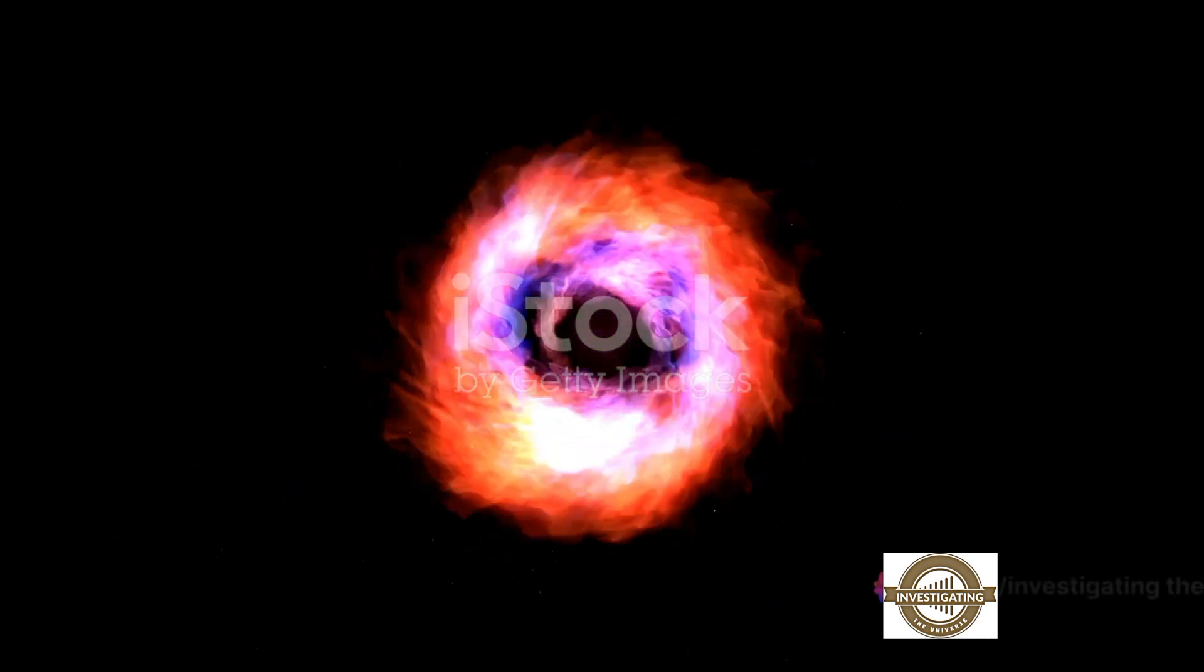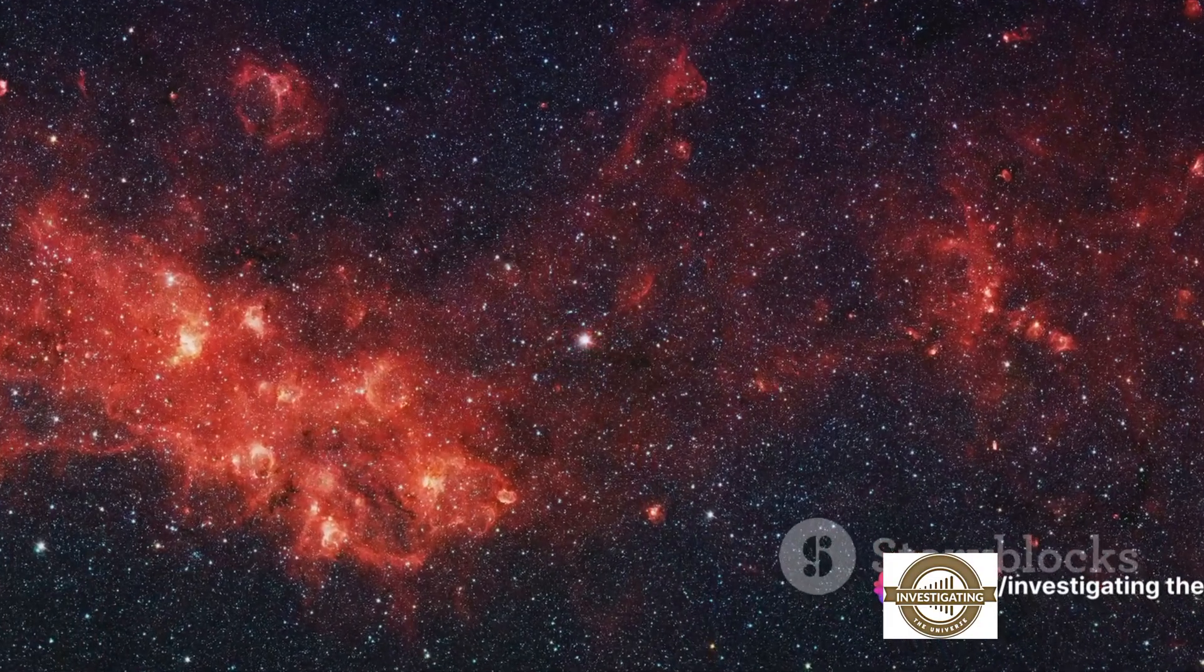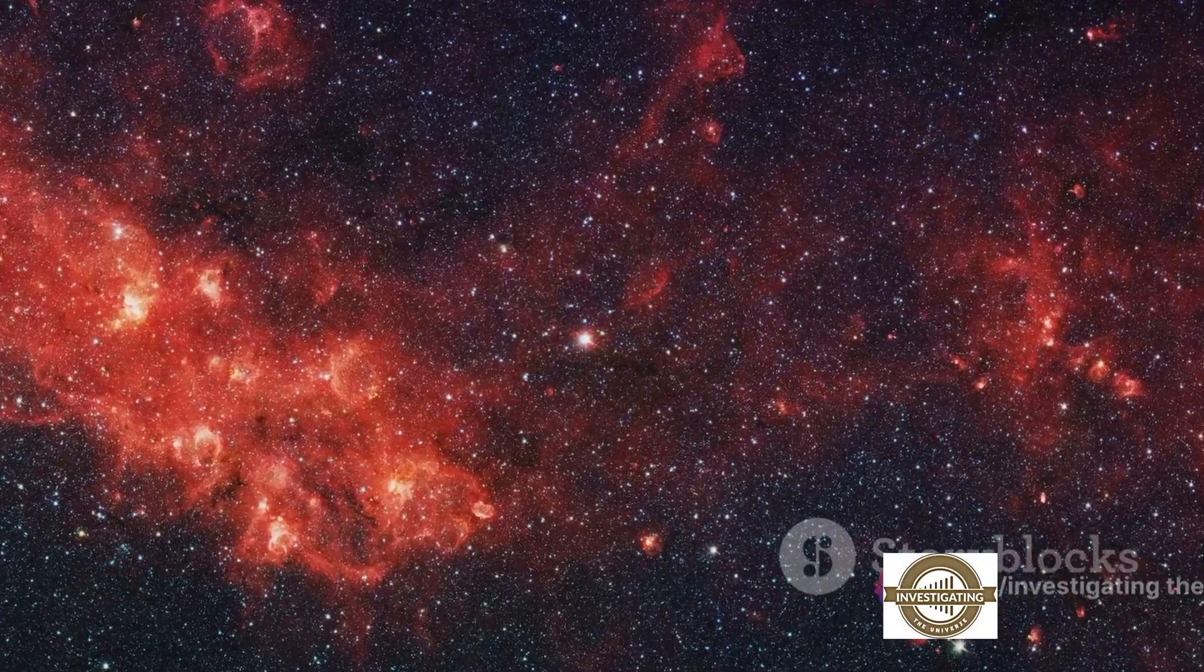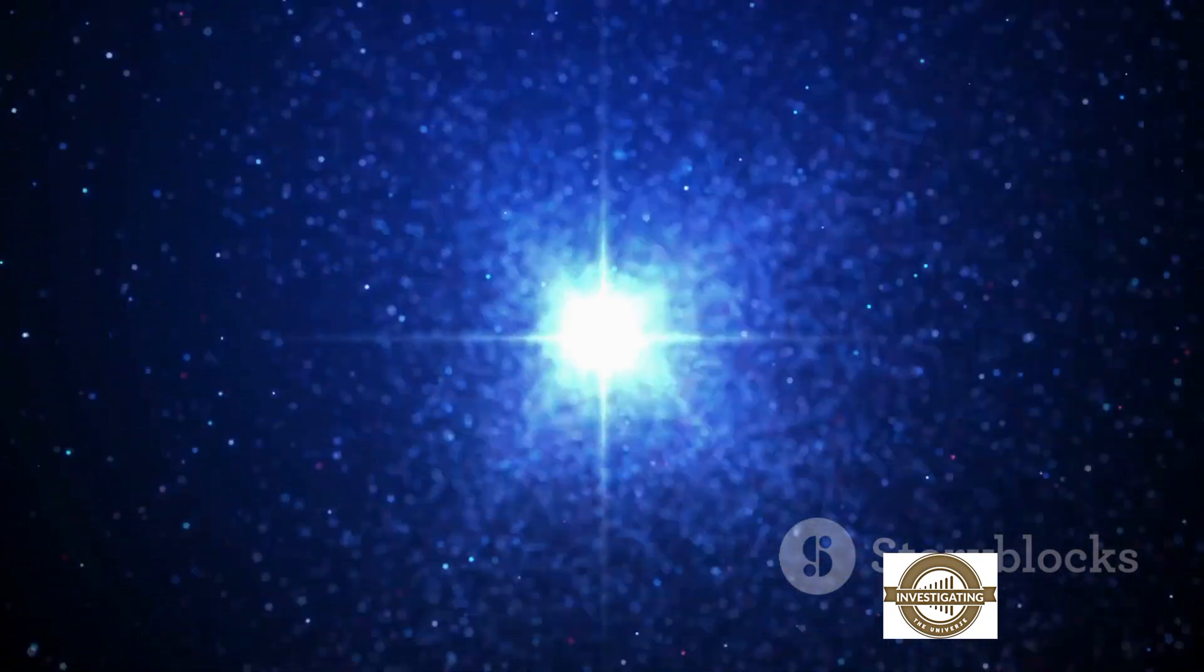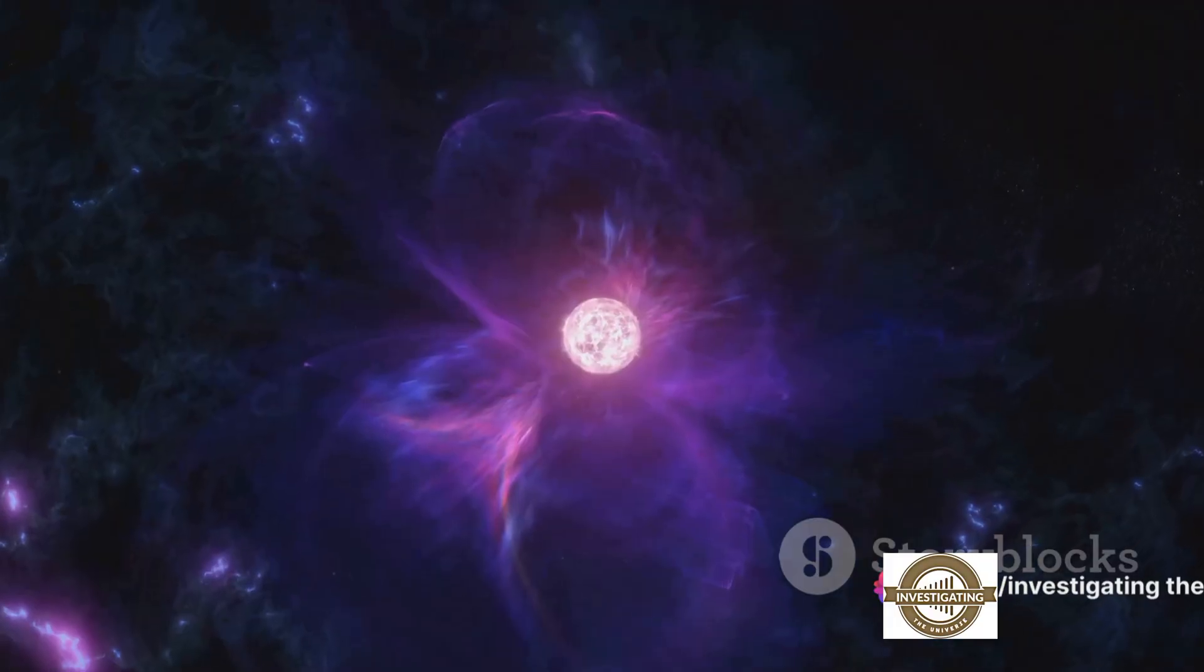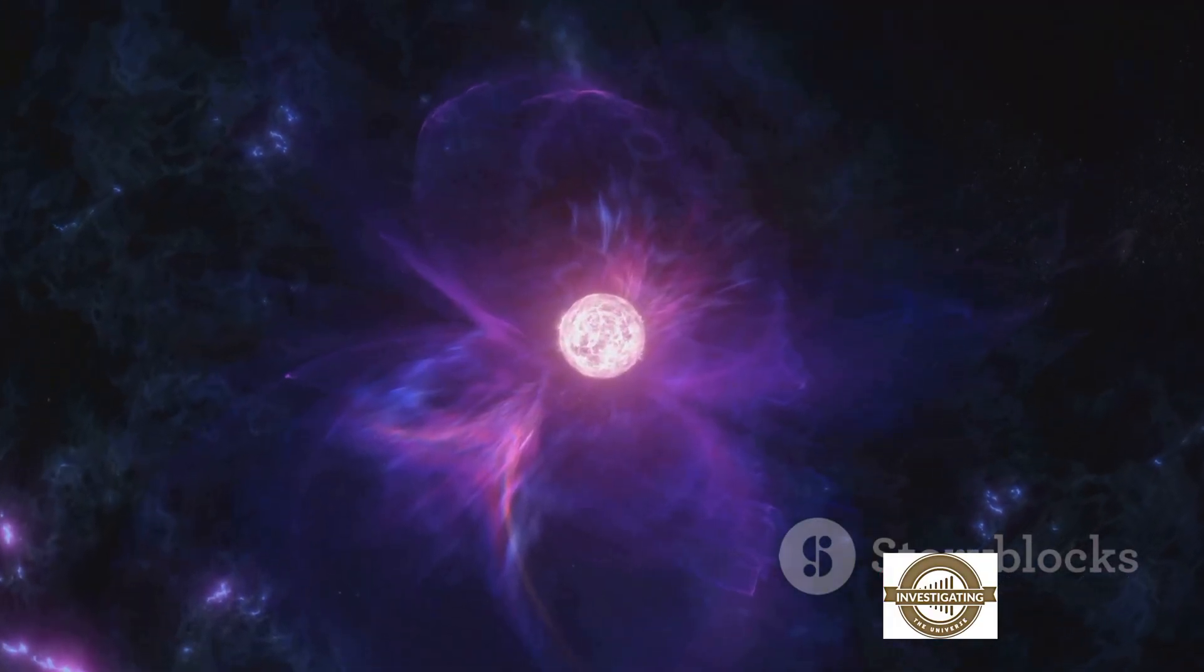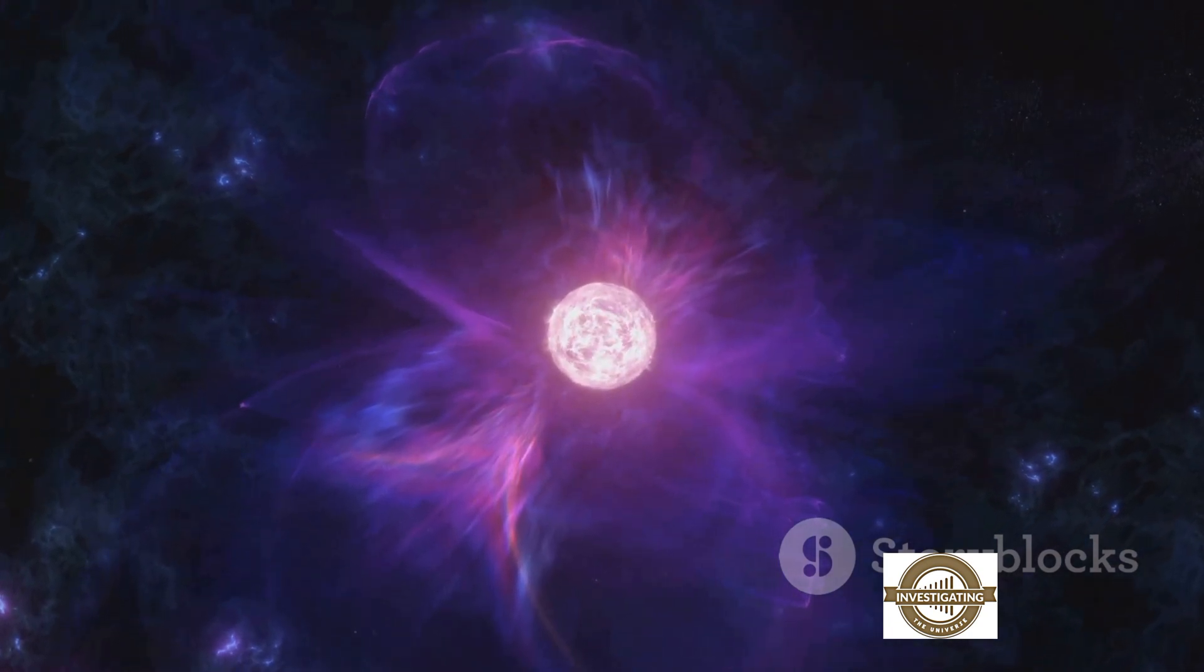As we wrap up our journey exploring Betelgeuse and its impending supernova, let's summarize our key points. We've delved into the life of Betelgeuse, a red supergiant star located in the constellation Orion, approximately 700 light-years away from us. Its size and brightness significantly surpass that of our sun, and it's on the brink of a massive transformation. We've learned about the life cycle of a star, and how, after a long existence, stars like Betelgeuse end their lives in a spectacular explosion known as a supernova.